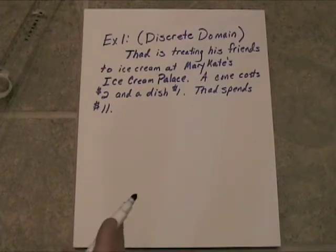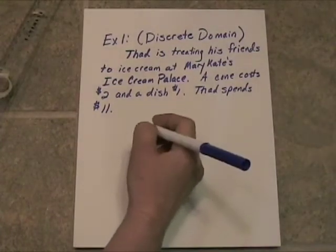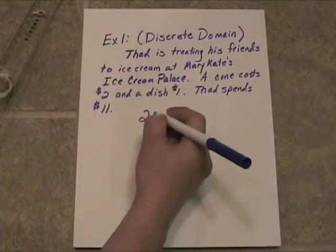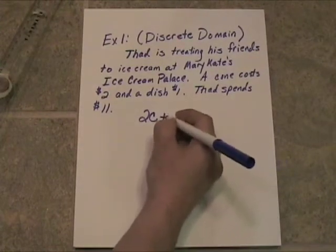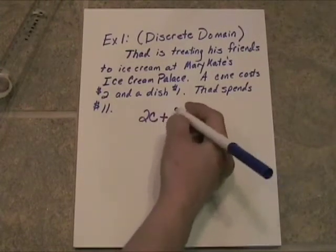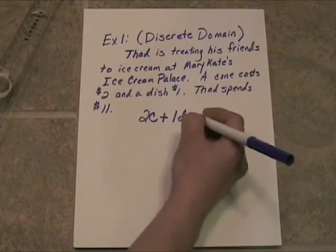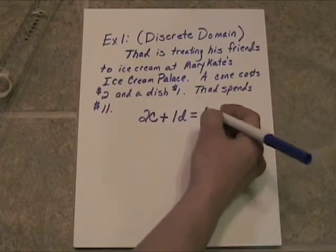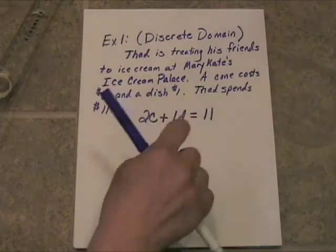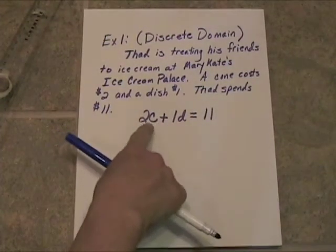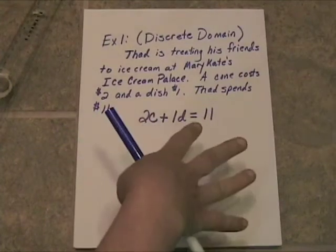Let's let C stand for the number of cones bought. Each cone costs $2, so that would be 2C. Plus however many dishes were sold — each dish is $1 — so that's 1 times the number of dishes, D. And the total he spent was $11: 2C + 1D = 11. We have variables to the first power and they are not being multiplied or divided, so this is a linear combination.